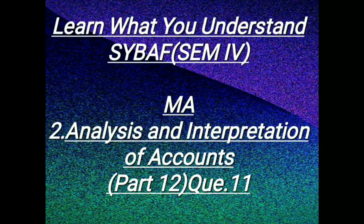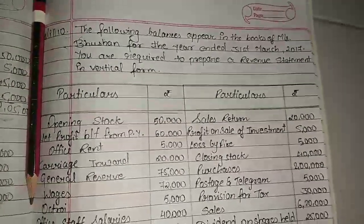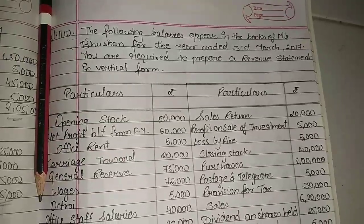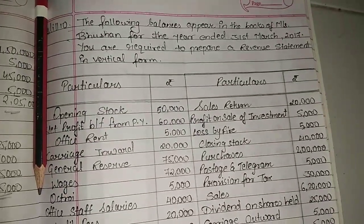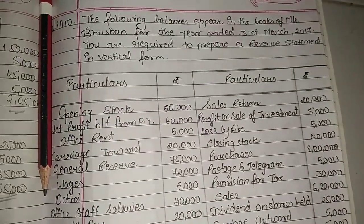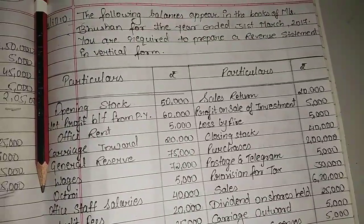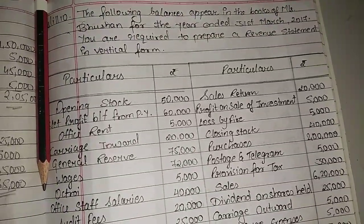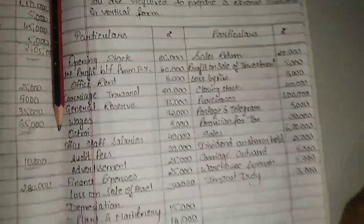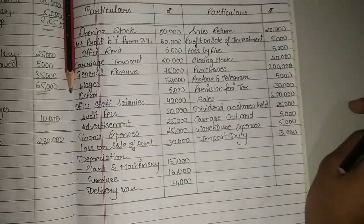Hi friends, welcome to my channel. Learn what to understand, as for SYBAF Sem IV, today we are going to do MA second lesson, analysis and interpretation of accounts, Part 12, Question 11. The following balances appear in the books of MS Bhushan for the year ended 31st March 2017. You are required to prepare a revenue statement in vertical form.